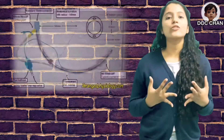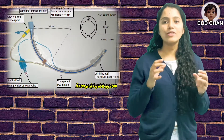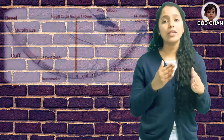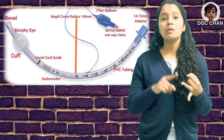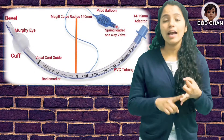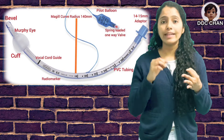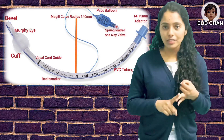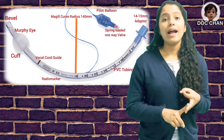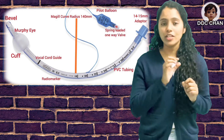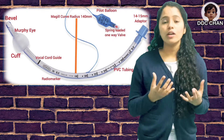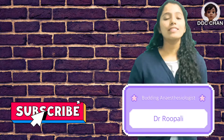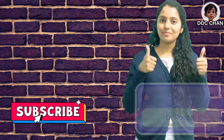To summarize: the endotracheal tube used for intubation has a ventilator end and a patient end. At the patient end, we have a bevel, Murphy's eye, and a marking used as a guide to know the depth of insertion. It has different markings, areas of curvature, and it's made of a transparent material which helps us know if there is any secretion in the lumen. All the best for your intubation.